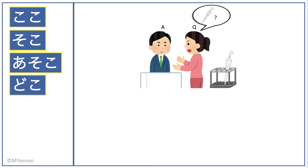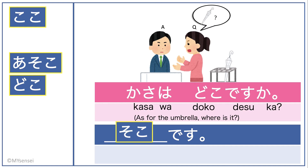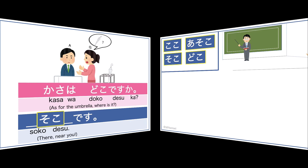Here, the woman is looking for her umbrella — kasa. So she would say, 'Kasa wa doko desu ka?' If you were the man, what would you say? The answer is, 'Soko desu.' He is using soko because the umbrella is away from him and near her.